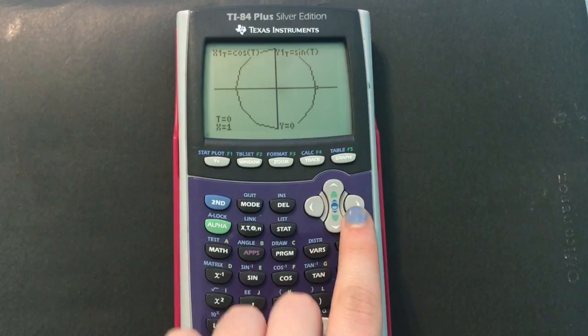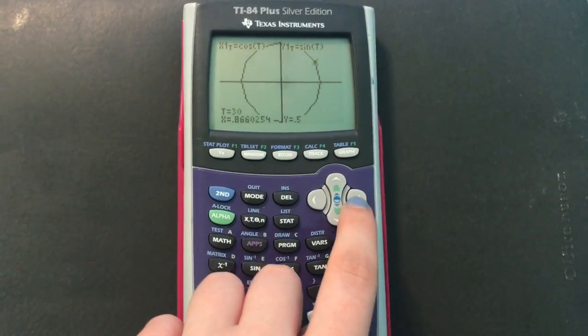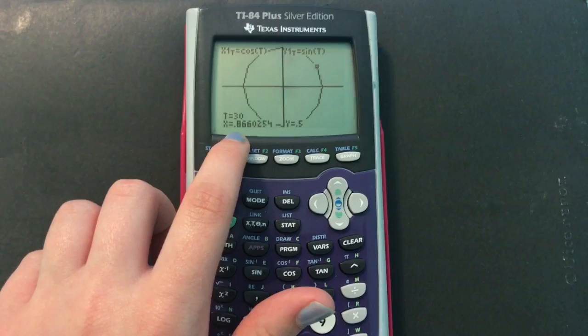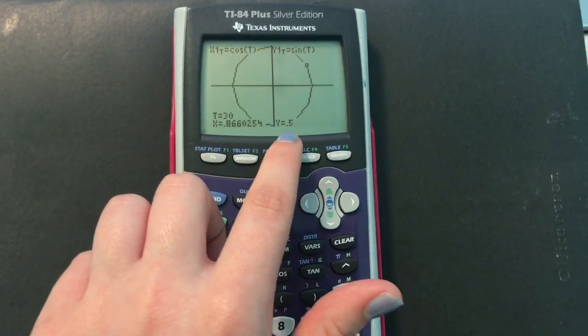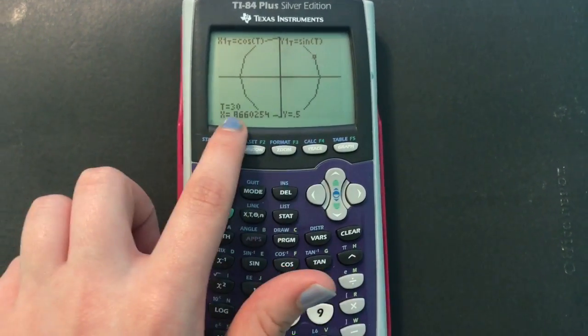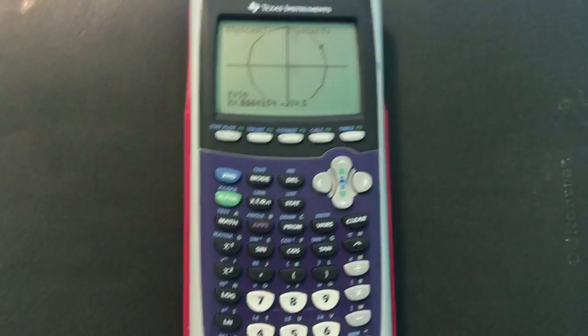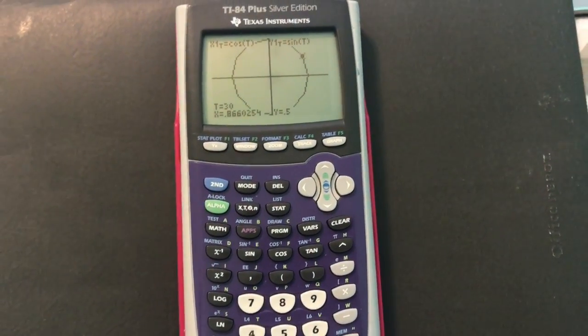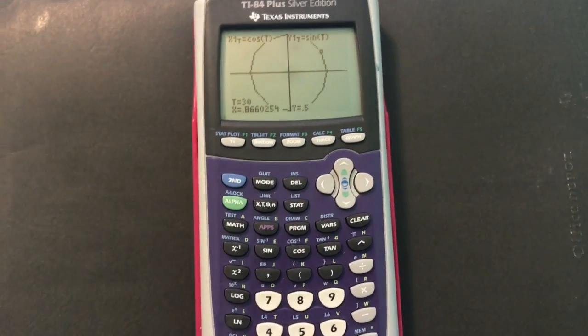Then as you press the right arrow, it goes up by increments of 30. So then cosine is 0.8660254, and then sine is 0.5. We know that usually the unit circle is in square root of 2 over 2, or square root of 3 over 2, or 2 over square root of 2.